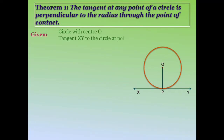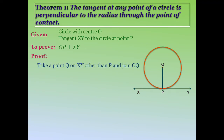We are given a circle with center O and tangent XY at point P; we need to prove OP is perpendicular to XY. If we take a point Q on XY other than P and join OQ, since Q is outside the circle — because there is only one common point between the line and the circle, that is point P — all other points of line XY are in the exterior of the circle, so OQ will be greater than OP.